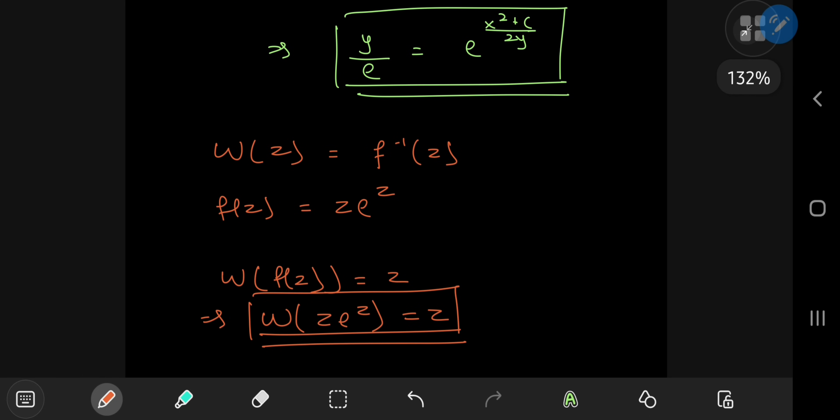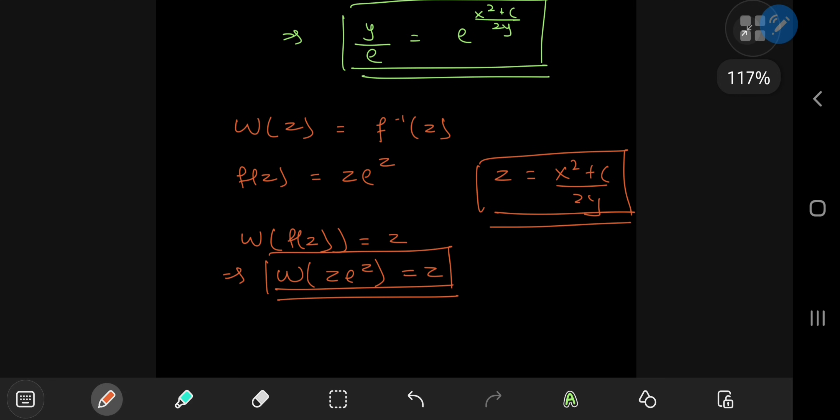Notice in the equation in green our z equals (x squared plus c) divided by 2 times y. So we have the e to the z thing covered but we're missing the z term itself. So I can get that by expanding by (x squared plus c) by 2y.